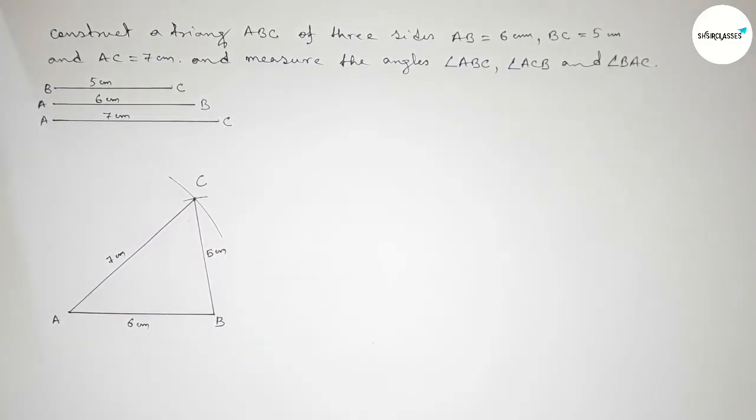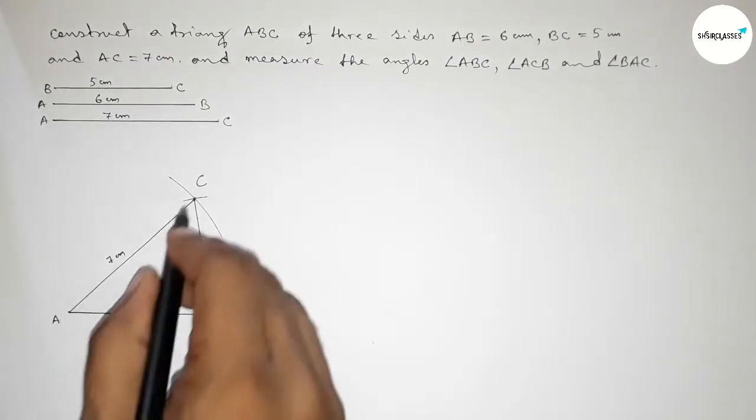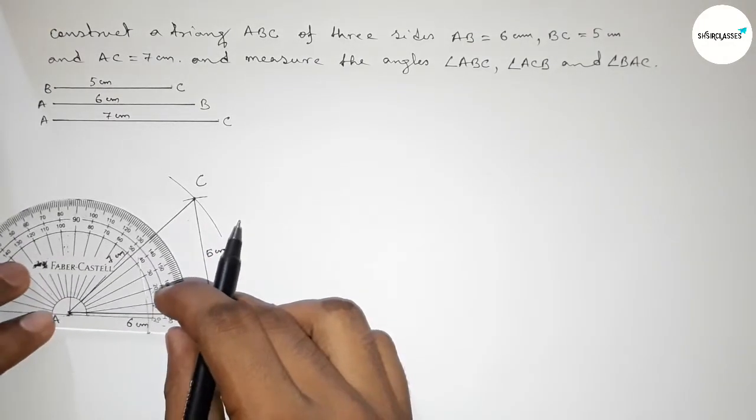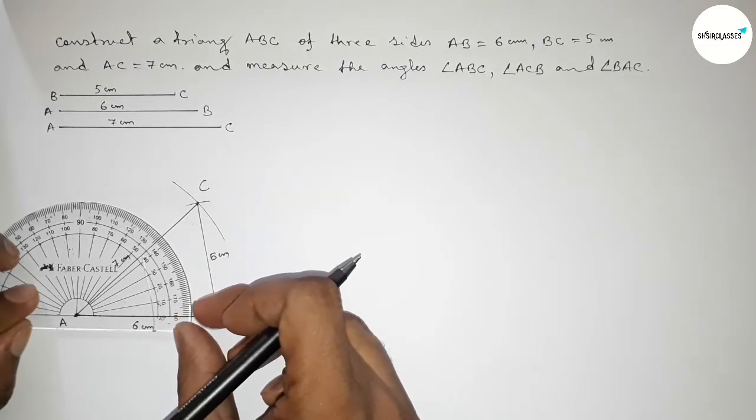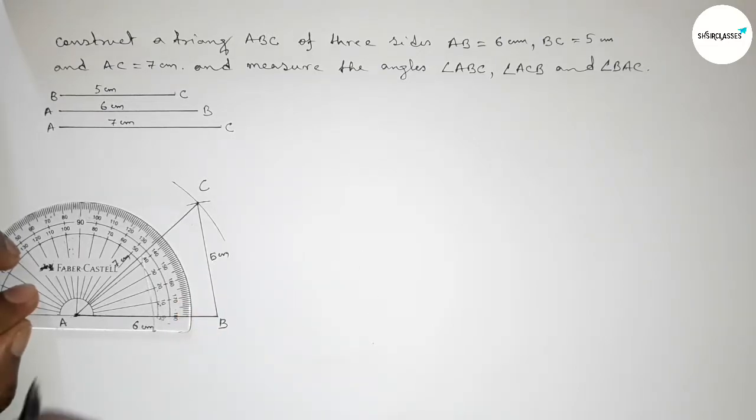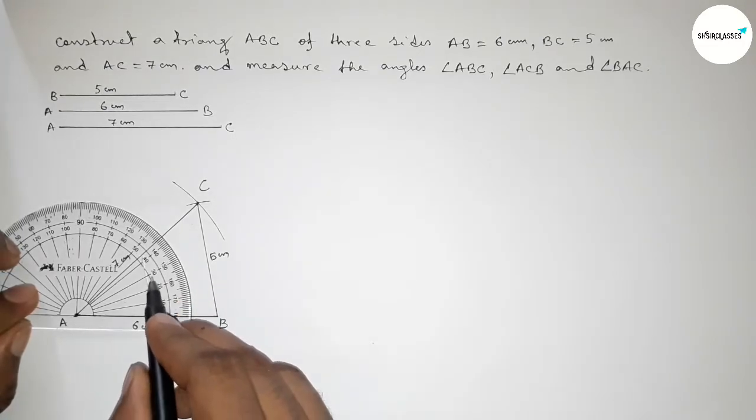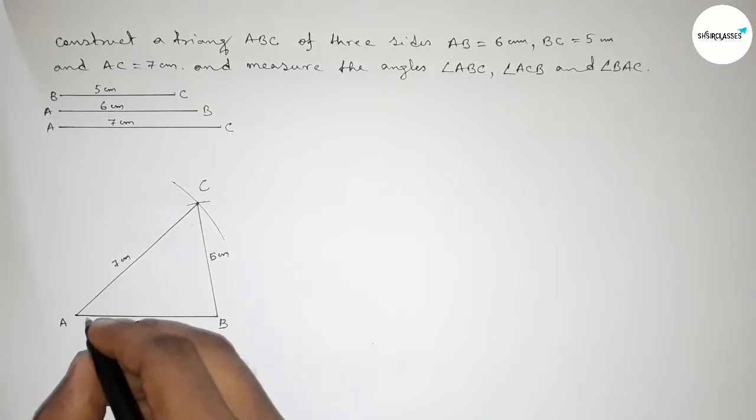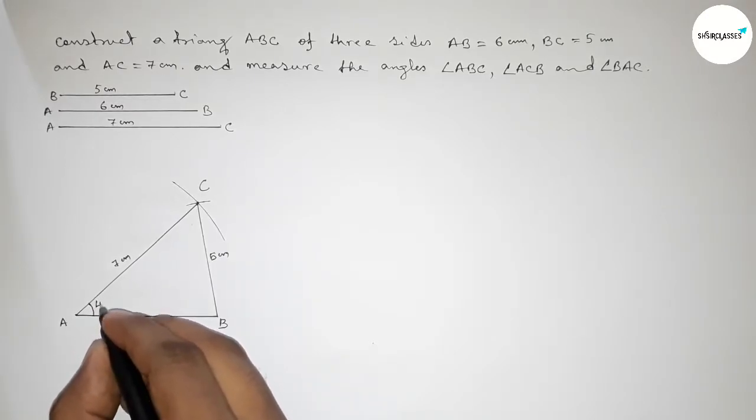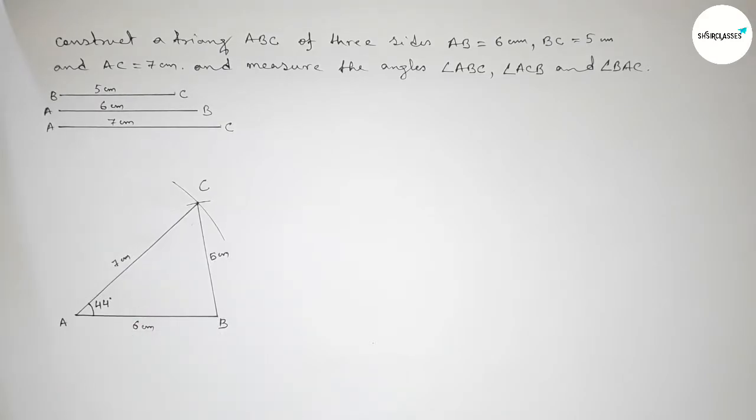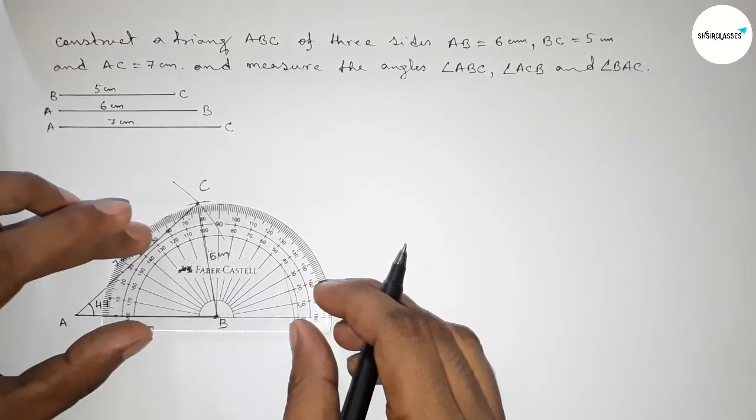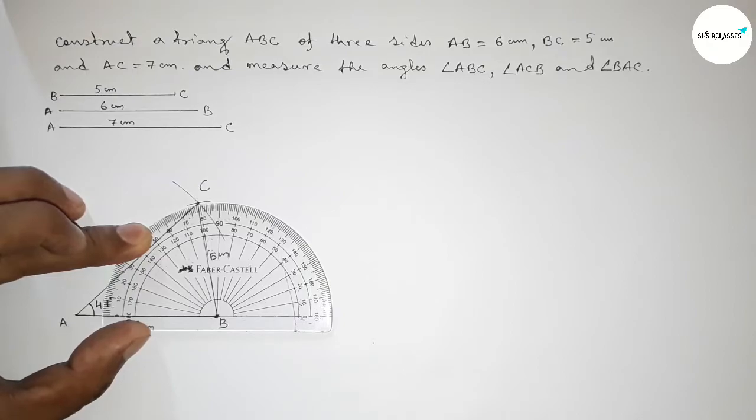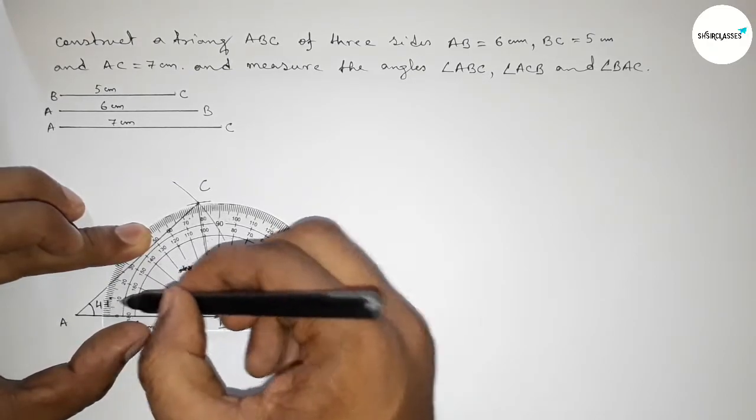Next we have to measure the angles. First taking angle BAC. This is 40, 41, 42, 43, and this is 44 approximately. So angle BAC equal to approximately 44 degrees.